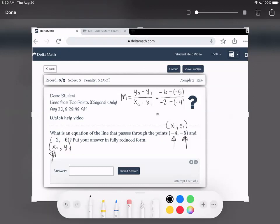Remember, when you're subtracting a negative, it's actually adding. So we actually have negative 6 plus 5. So negative 6 plus 5 is negative 1. And then we have a negative 2 minus a negative 4, which means negative 2 plus 4, which gives us 2.